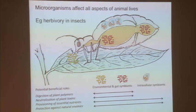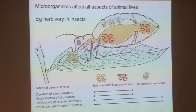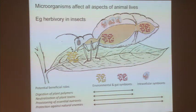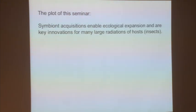Depending on where the microbes are, they have different possibilities of doing things for the insect. For example, it's hard for an intracellular symbiont to be involved in detoxifying stuff that comes in with the food, because by the time it gets inside those cells the insect is already intoxicated.